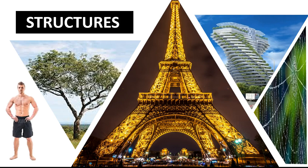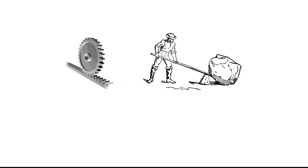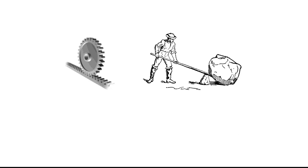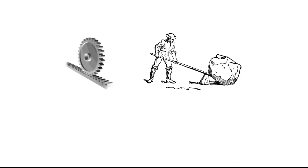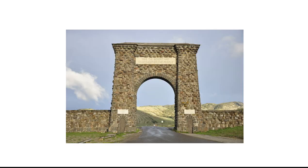Structures are more difficult to understand than mechanisms. For example, with a mechanism such as gears, if you turn this gear, then that one moves sideways — this is a rack and pinion. With a lever, if you push down, you can see the other end move up. But with a structure, when you put a load on it, you don't see the result.